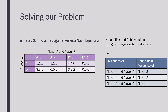We're then going to find all subgame perfect Nash equilibria. The reason I'm saying subgame perfect Nash equilibria is because there is no proper subgame in this game, so every Nash equilibrium that we find is going to be subgame perfect. We're going to use the tick-and-bob procedure to do that.